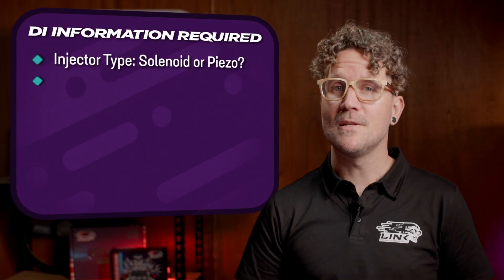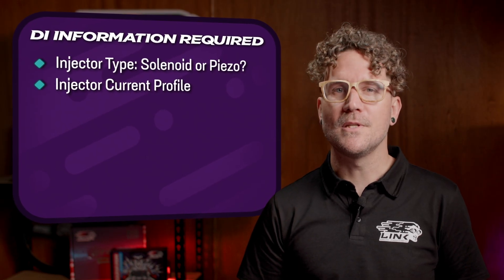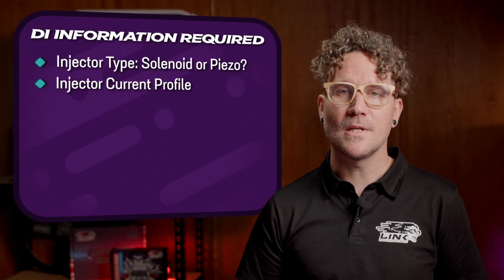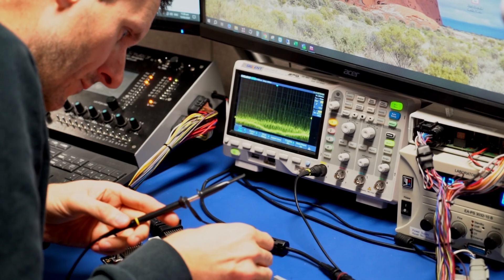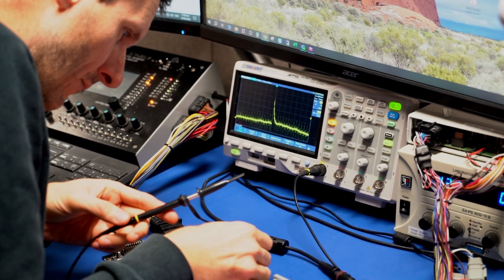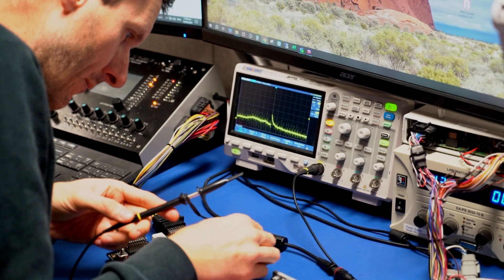On visual inspection, piezo injectors are typically smaller and more elaborate than their solenoid counterparts. To find an injector current profile, you'll need to do some reverse engineering using an oscilloscope with a current probe. You'll need to capture and analyse the waveform generated by the injector to establish the peak current, hold current and response times.